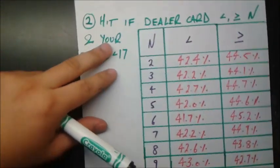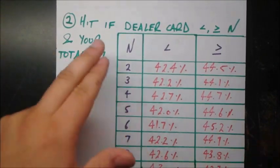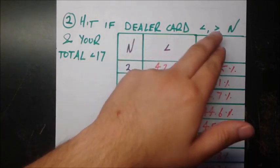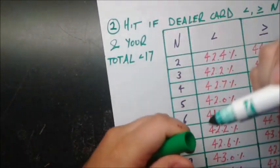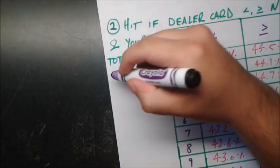So now let's look at a different strategy. The second strategy is you're going to hit if the dealer's card is less than or maybe greater than or equal to some variable n, and your total is less than 17. So let's just explain this part first. This and your total is less than 17.